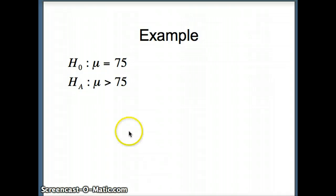Here's an example. We have H₀: μ = 75 versus Hₐ: μ > 75. Let's make sure we understand what this means. μ is a parameter, so it is a characteristic of an entire population.